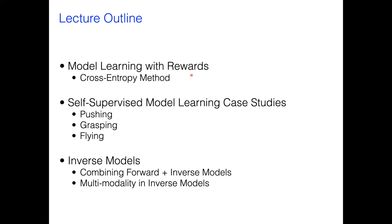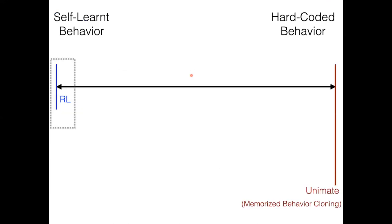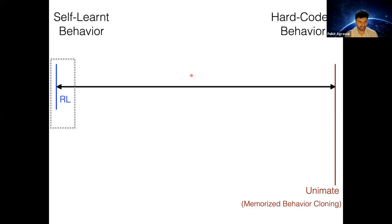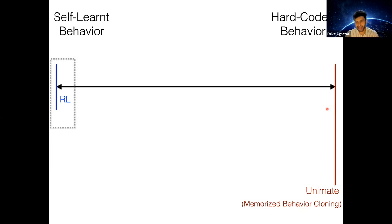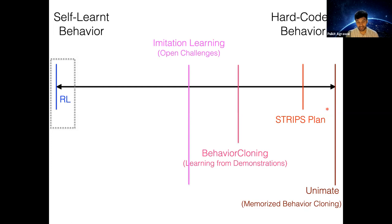So until now in the course, we have looked at a broad spectrum of methods. On one hand, we have looked at reinforcement learning, which is completely self-learned. On the other extreme, we looked at hard-coded behavior, where we hard-code each action that the robot needs to perform. We also looked at things in the middle — for example, STRIPS briefly, and we went into much detail in behavior cloning and imitation learning.